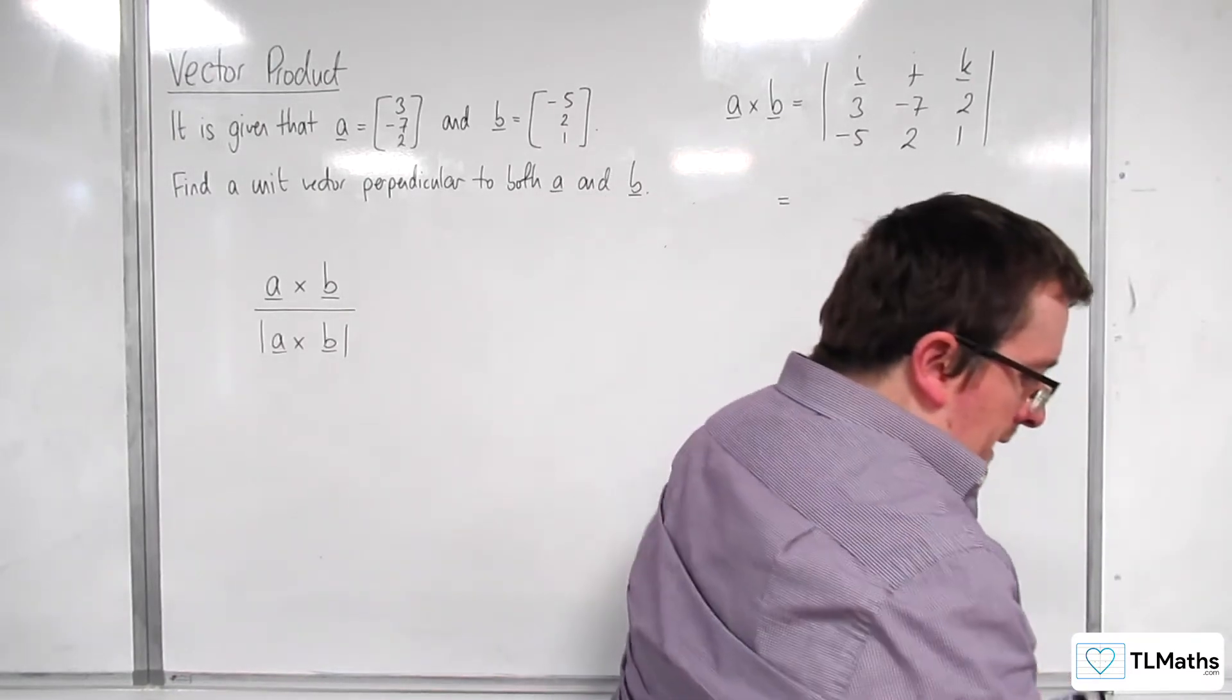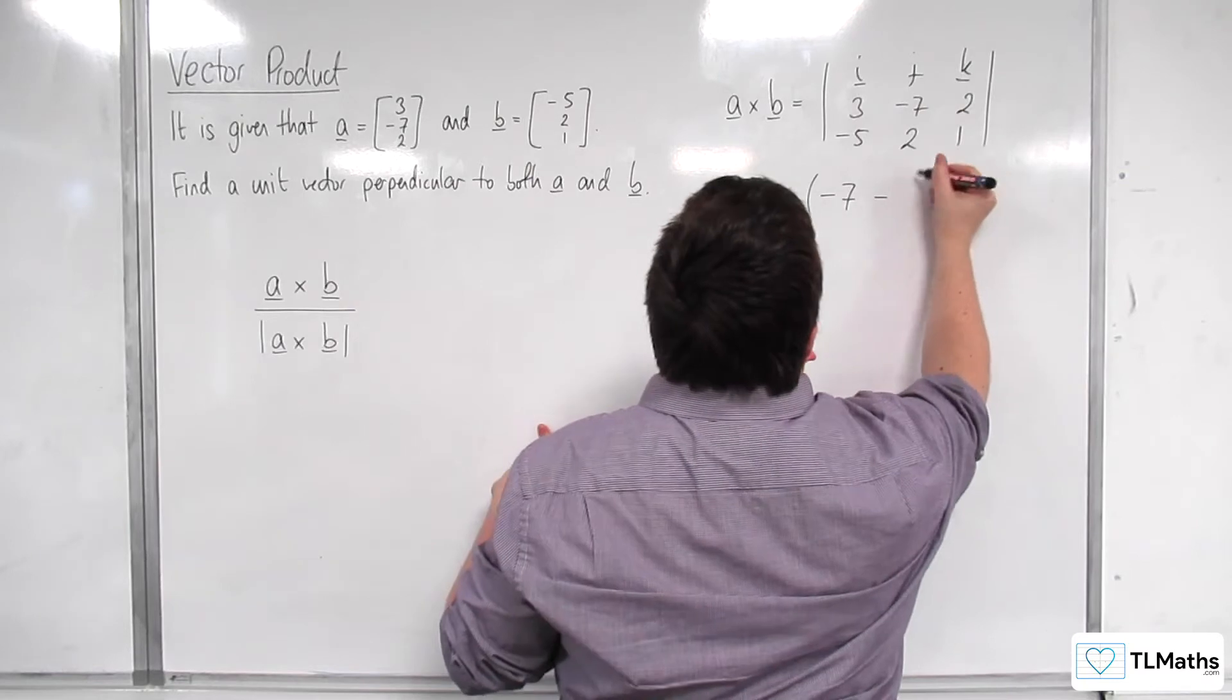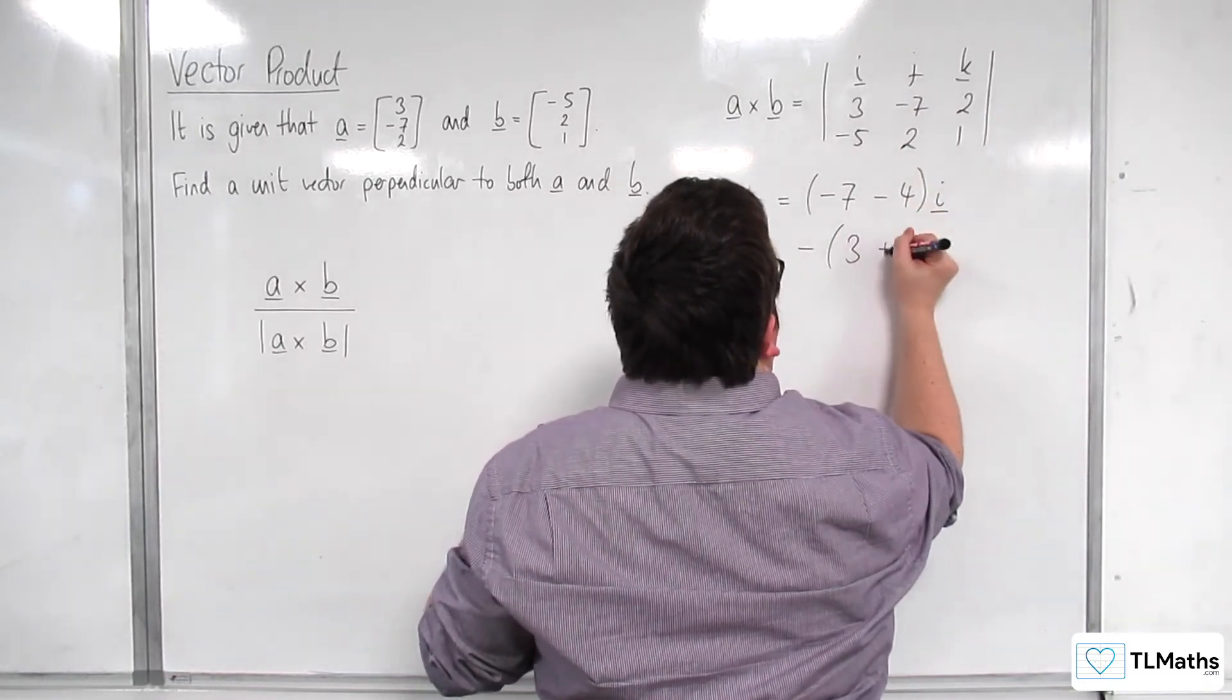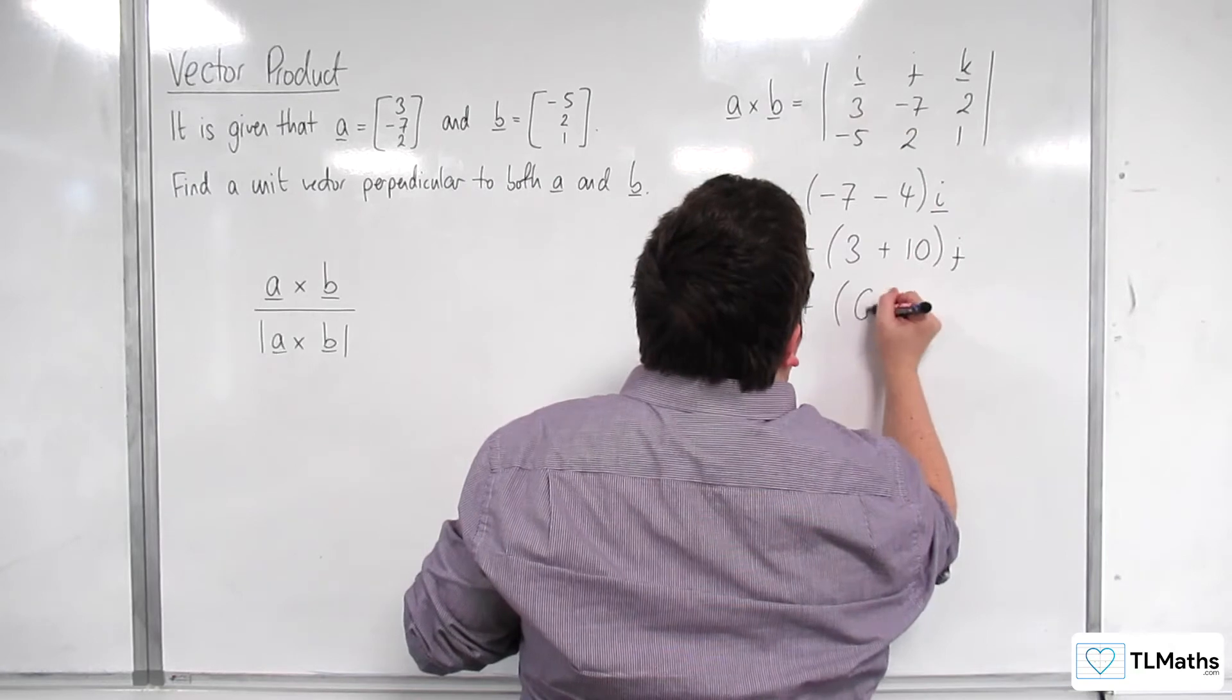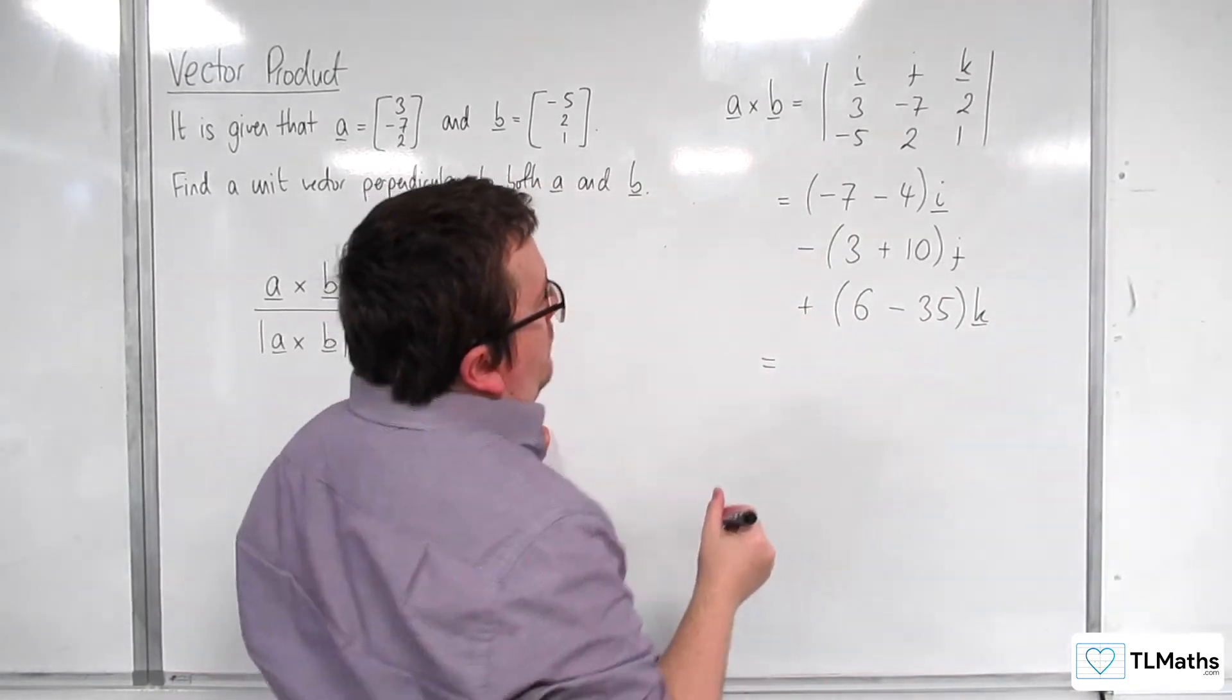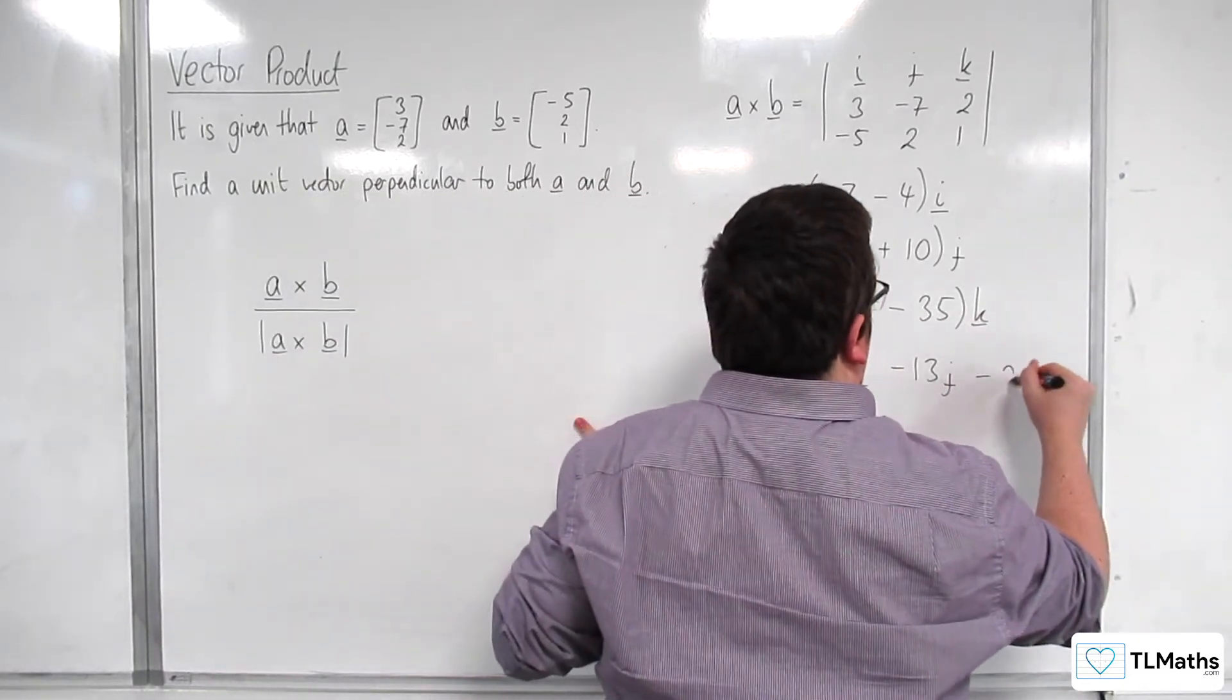And that's going to be i times -7 times 1, then take away 2 times 2, lots of i, then take away 3 lots of 1, then take away -5 times 2, so plus 10, j. Then plus 3 times 2, take away -5 times -7, so take away 35, k. So here we've got -11 i, we've got -13 j, and then -29 k.